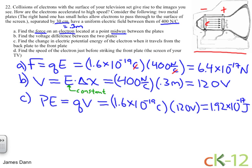Finally, in Part D, we'd like to know the speed of the electron just before it strikes the other side. This is an energy conservation problem, so the initial energy equals the final energy. The initial energy is all potential energy, and in the final state the electron gets to the other side and it's all kinetic energy.